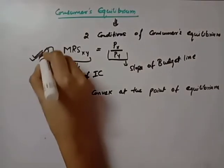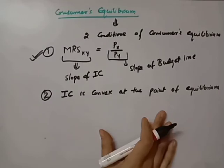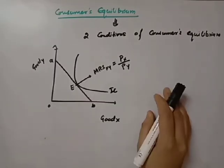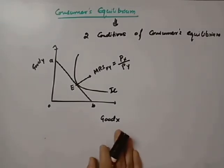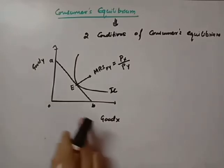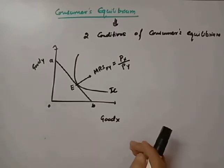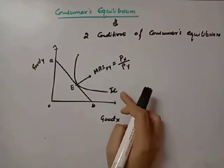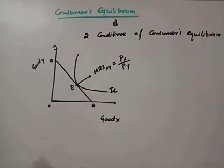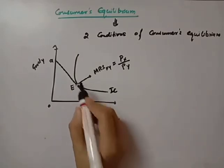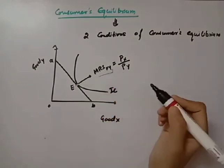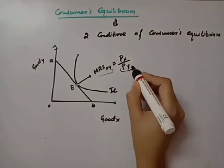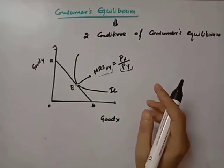From the diagram, if we try to understand the first condition: at the intersection of the indifference curve and the budget line — that is at point E — where the slope of the indifference curve is equal to the slope of the budget line, the consumer is at the equilibrium point.